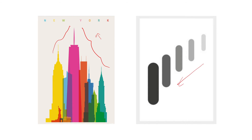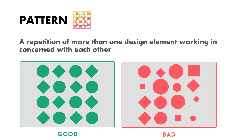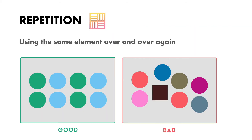Next is pattern. Pattern is the repetition of more than one design element working in concert with each other. In a good example, the shapes are uniform, the size is uniform, and the distribution of elements is also uniform. In a bad example, the size is changing and the order is also changing, so it is not uniform in terms of pattern, size, or arrangement. In pattern examples, you can see the same elements being repeated.